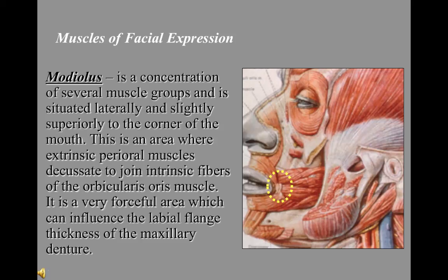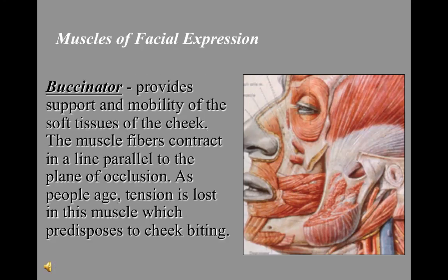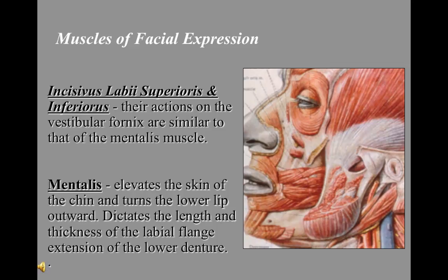The modiolus is a very forceful area which can influence the labial flange thickness of the maxillary denture. The buccinator provides support and mobility of the soft tissues of the cheek; its fibers contract parallel to the plane of occlusion. As people age, tension is lost in this muscle, predisposing the patient to cheek biting. Incisivus labii superioris and inferioris have actions on the vestibular fornix similar to the mentalis muscle. The mentalis muscle elevates the skin of the chin and turns the lower lip outward, dictating the length and thickness of the labial flange extension of the lower denture.